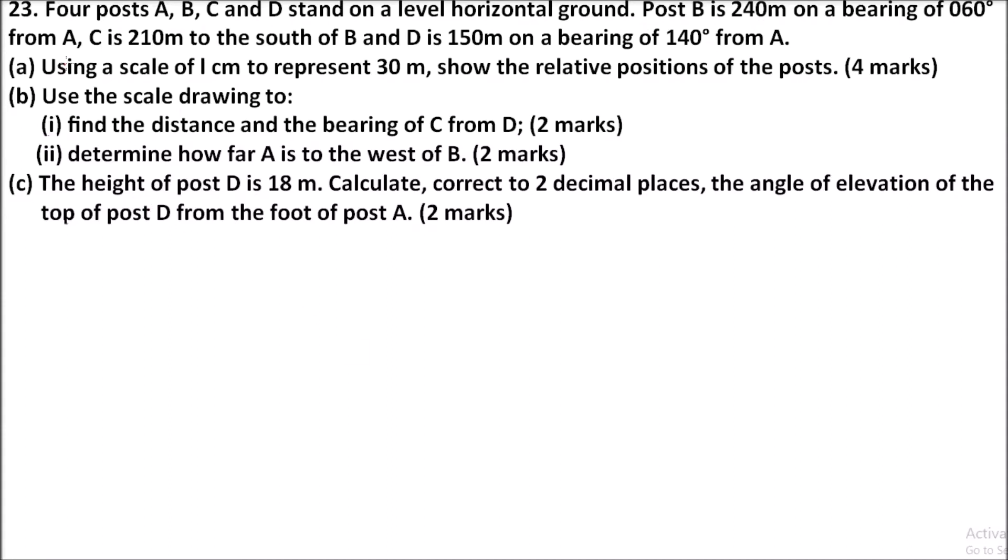Question number 23: Four posts A, B, C, and D stand on a level horizontal ground. Post B is 240 meters on a bearing of 060 degrees from A. C is 210 meters to the south of B, and D is 150 on a bearing of 140 from A. Using a scale of one centimeter to represent 30 meters...